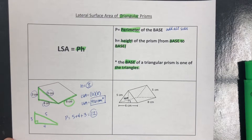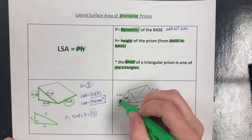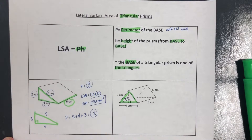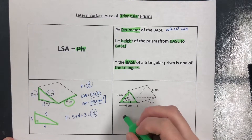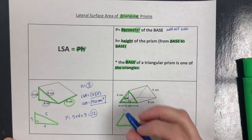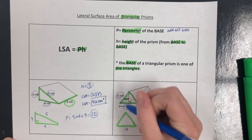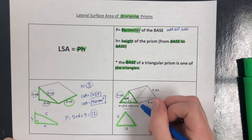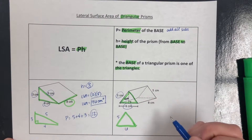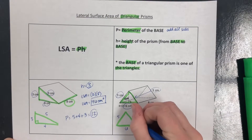For our other example — another tent shape — again we highlight our base and redraw. Labeling all the sides: the bottom is 6, the left side is 5. The other side is not labeled, and I would not always assume the opposite side is equal, but in this case it is, because it's labeled on the back. So this side is also 5.